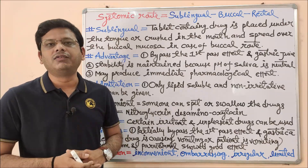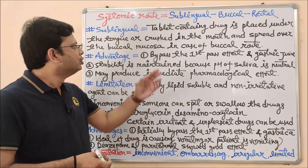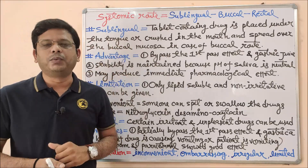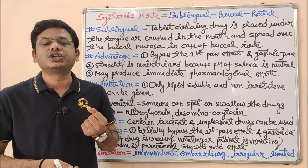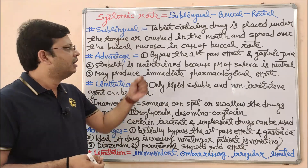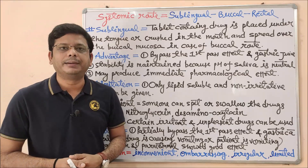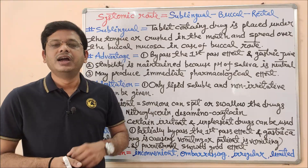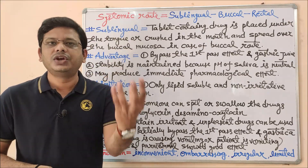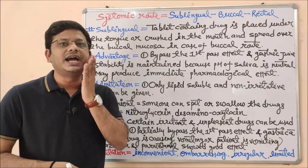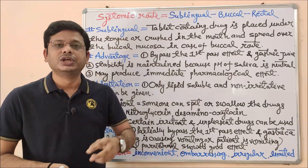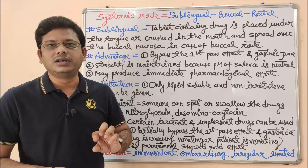This is one of the important routes of drug administration. It has several advantages and a few limitations. Below the tongue, there is secretion of saliva which dissolves that particular drug. But if we crush or chew a tablet and place that drug beside the cheek, that is called the buccal route of drug administration.